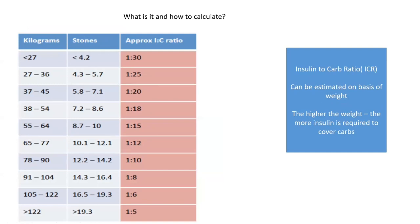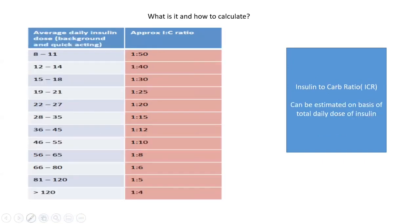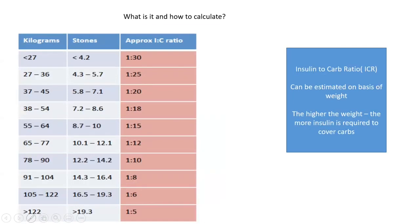The ICR can also be estimated from body weight. For patients weighing more than 122 kg, the ICR is lower due to insulin resistance. For those weighing 30–45 kg, the ICR may be 1:20. For 65–75 kg, approximately 1:12. For 78–90 kg, approximately 1:10. The general principle: the thinner the individual or the lower the total daily dose, the higher the ICR; the heavier or more insulin resistant, the lower the ICR — meaning more insulin is required per gram of carbohydrate.